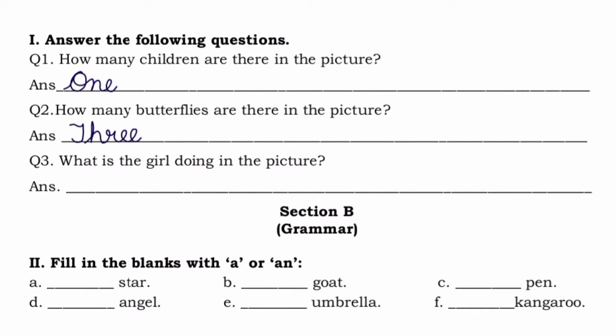Now let's move to the next question: what is the girl doing in the picture? We had already seen that the girl was watering the plants, so the answer will be 'watering the plants'. So kids, in picture comprehension the picture may vary, the questions may vary, but the method is the same — you have to see the picture and then answer the given questions.